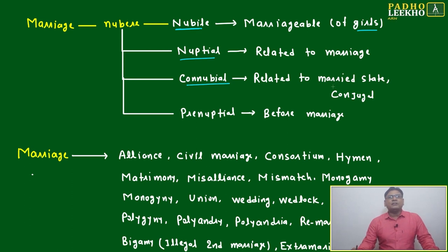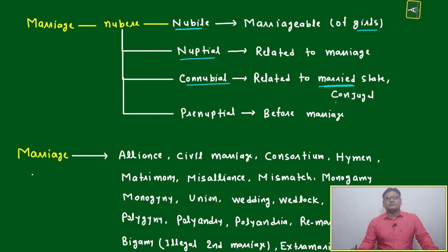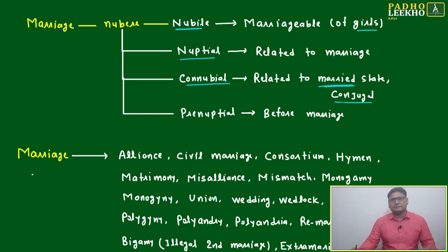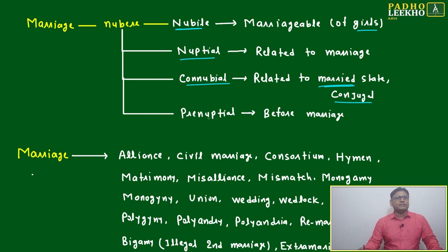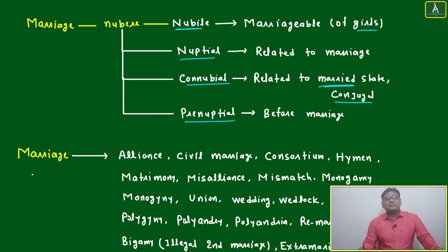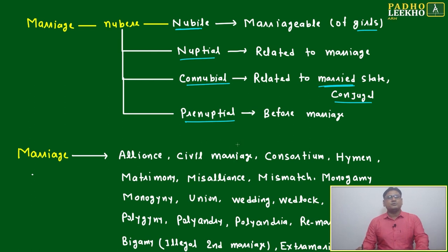Another word is 'connubial' — related to the married state. 'Conjugal' means once marriage has happened, you are in a married condition, so it is a connubial issue or connubial condition. Then 'prenuptial' — pre means before, nuptial means related to marriage, so prenuptial means whatever is happening before marriage.